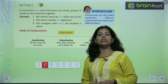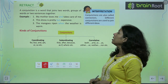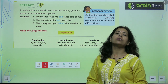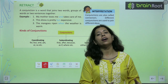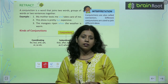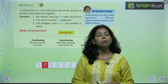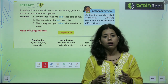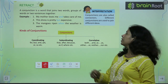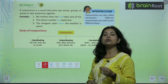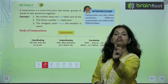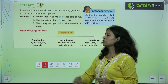Let's come to an example. My mother loves me and takes care of me. This dress is pretty but expensive — ye dress bhoat sundar hai, par bhoat mehengi hai. 'But' is the conjunction here.